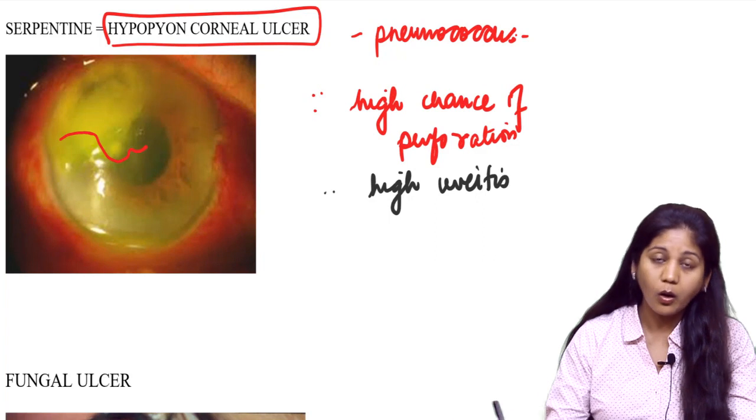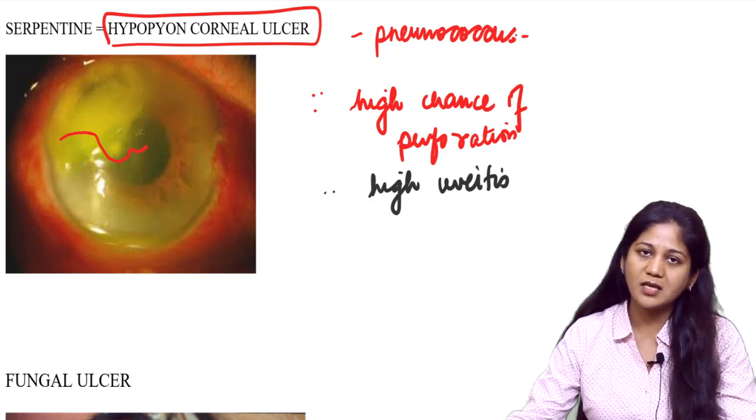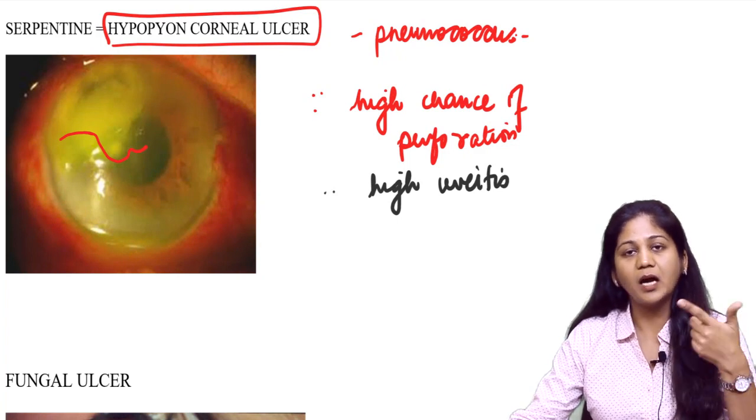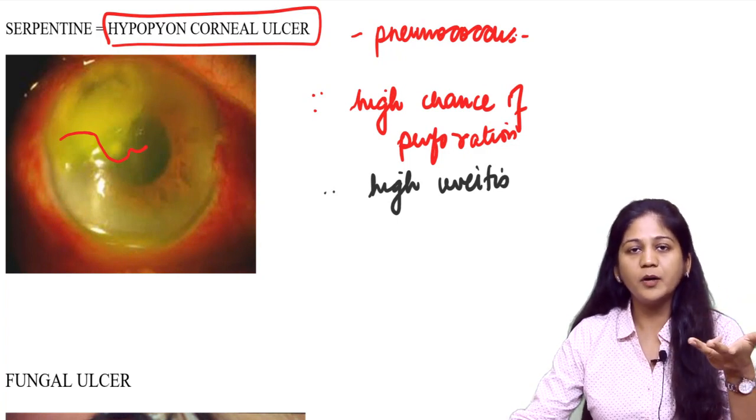This is a special ulcer: pneumococcus serpentine ulcer, hypopion corneal ulcer, with perforations and high uveitis. This is all you must know about this type of ulcer.